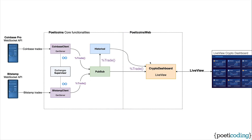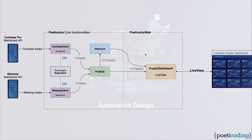This is the whole architecture with all the components we are going to see. Our application is split in two parts: the Poetic Coins core and the web part. We'll start by quickly seeing how the Poetic Coins core part was built and how to use its public interface. Then we'll move to the Live View part, building the dashboard ourselves.